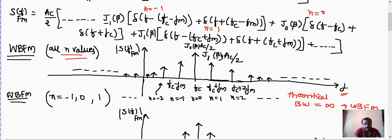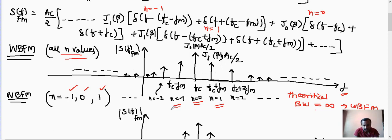Narrow band FM is defined by approximating the summation to only three values: n = minus 1, 0, and 1. All other values of n are neglected. So you get only the FC minus FM component, the FC component, and the FC plus FM component. All other side bands are ignored. That is why it is called narrow band FM — for small values of beta, the modulation index.